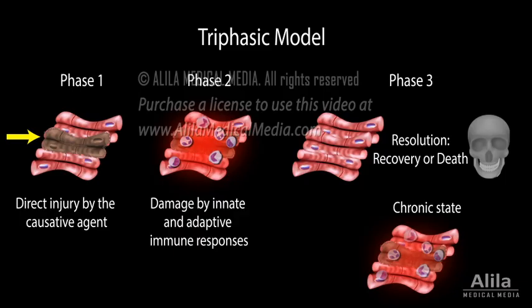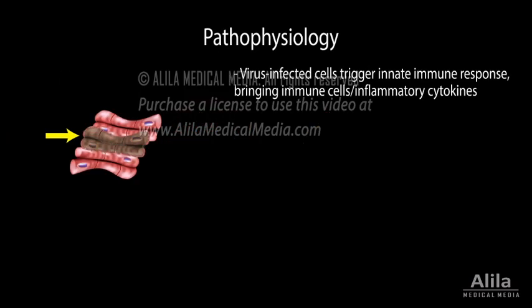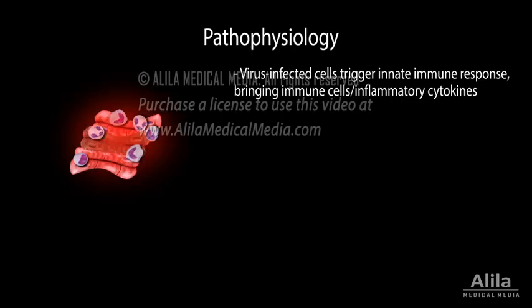In viral myocarditis, for example, virus-infected cells trigger an innate immune response that brings immune cells and inflammatory cytokines to the site of infection. While inflammation is a protective mechanism meant to fight the pathogen, it can damage the body's own tissues if it fails to stop after the pathogen is cleared.